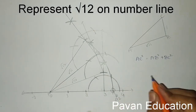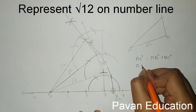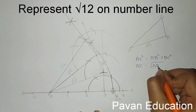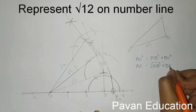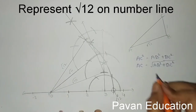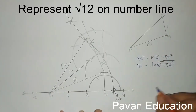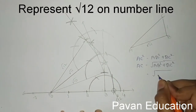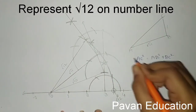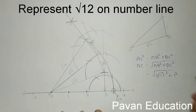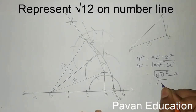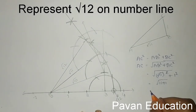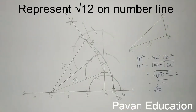So AC² = AB² + BC². Sending the square to the other side, we get AC = √(AB² + BC²). So AC = √(root 11 whole square + 1 square). The square and root cancel, giving √(11 + 1), which equals √12. So it is correct — AC equals root 12. We have verified that the answer is right.